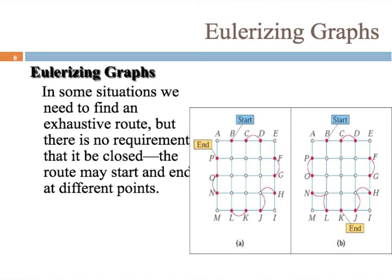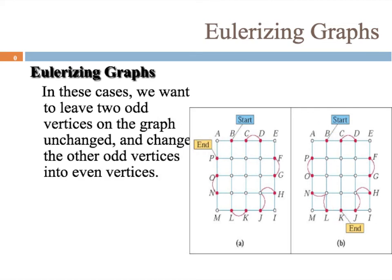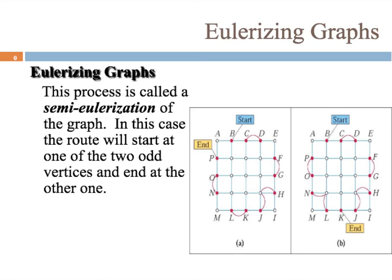Sometimes we want a complete circuit, but sometimes we just want a path and it's okay to start and end at a different spot. In this example, we left B and P as odd vertices — that's what we want to do when we want a path. In the second graph, B has degree 3 and K has degree 3, and every other vertex is even. We can choose whichever points we want as the starting and ending points. This is called semi-Eulerizing the graph — we start at one of the two odd vertices and end at the other.